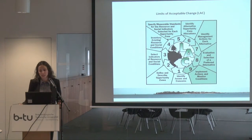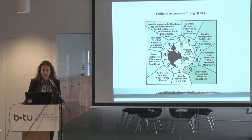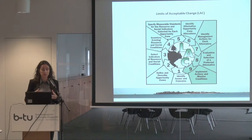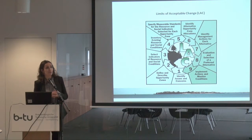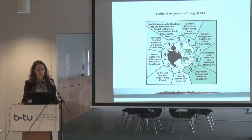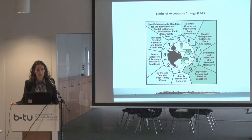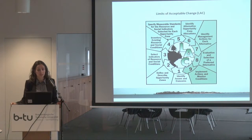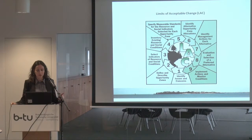The Limits of Acceptable Change is a process. It begins with identifying issues and concerns, defines and describes the opportunity for each zone that has been defined. After the identification of issues and concerns, it selects indicators of resource and social conditions, an inventory of existing resources and social conditions, specifying measurable standards for the resource and social indicators selected, and also the alternatives for each zone of application.